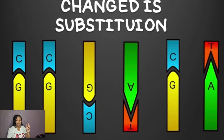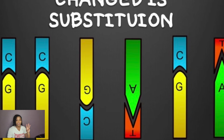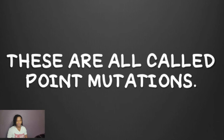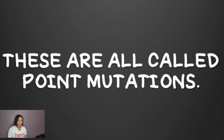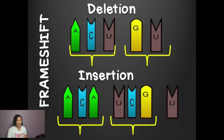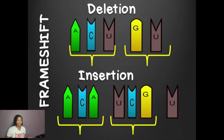Deletion, insertion, and substitution are all point mutations. Deletion and insertion will cause a frameshift mutation — the nucleotides don't come in threes, which makes the codons hard to read.